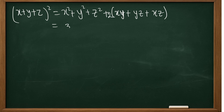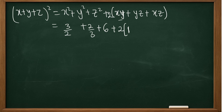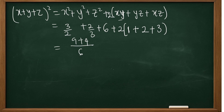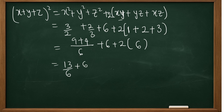Recall that x squared is 3/2, y squared is 2/3, and z squared is 6, plus 2 times the bracket containing: equation 1 gives xy = 1, equation 2 gives yz = 2, equation 3 gives xz = 3. Simplifying 3/2 plus 2/3 gives 9/6 plus 4/6 equals 13/6, then 13/6 plus 6 plus 2 times 6 equals 13/6 plus 6 plus 12, which is equivalent to 121 over 6.